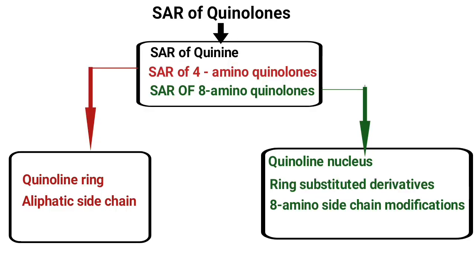In this class we are going to see the SAR of quinolones. We have already seen quinolone anti-malarials; the examples are quinine, 4-aminoquinolines, and 8-aminoquinolines. In this SAR we are going to see the SAR of quinine, SAR of 4-aminoquinolines, and SAR of 8-aminoquinolines. For 4-aminoquinolines we will examine the quinoline ring and aliphatic side chain. For 8-aminoquinolines we will see the quinoline ring, ring-substituted derivatives, and 8-amino side chain modifications.